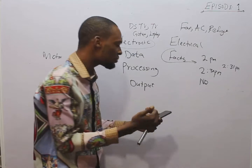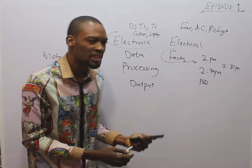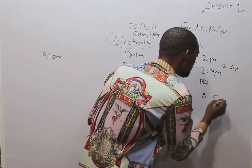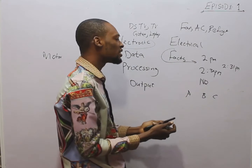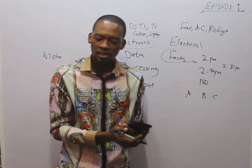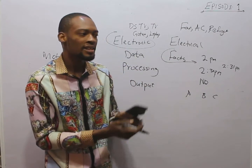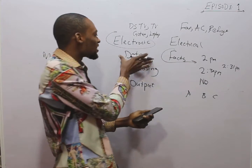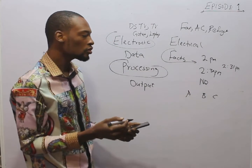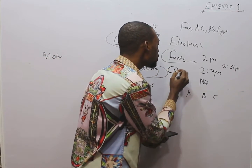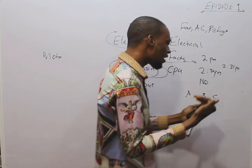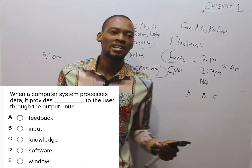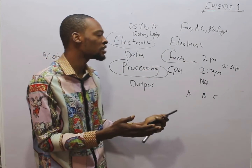After accepting data, the computer begins to process it via the CPU. The computer has a central processing unit. The central processing unit is the brain of the computer — that is where information is received and processed.